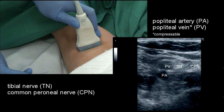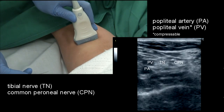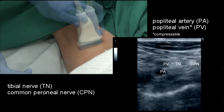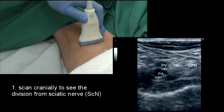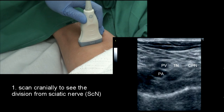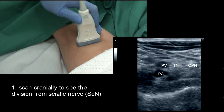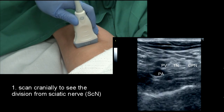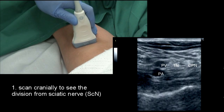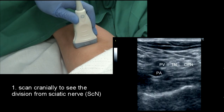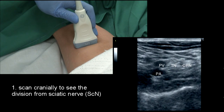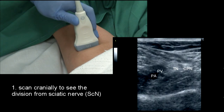The sciatic nerve divides into the tibial and common peroneal nerves, as shown on the image. The point of division can be identified in some patients by scanning proximally.